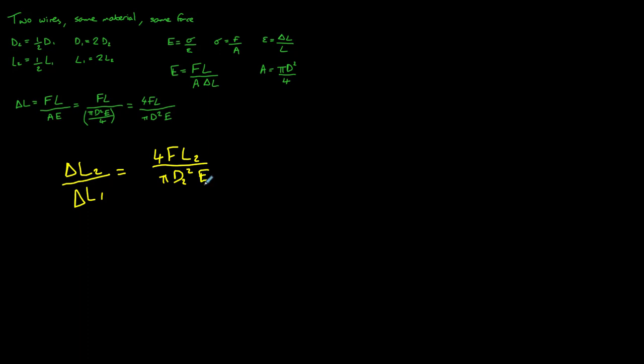Again, E is a constant here. These wires are made of the same material, so they have the same Young modulus. So we take all of that and we divide it by the same equation again, but this time using the values for wire 1. So this is going to be 4FL1 divided by pi D1 squared multiplied by E.